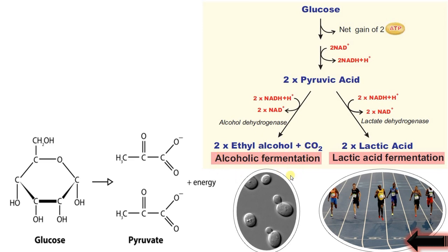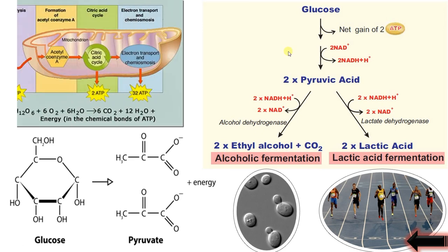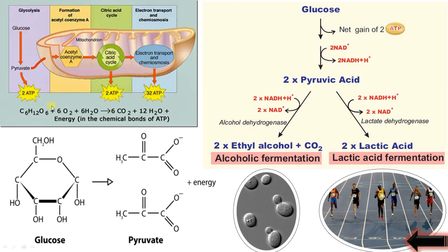In yeast cells, pyruvic acid is further converted to ethanol and carbon dioxide — this is called alcoholic fermentation. Whereas in higher animals, in muscles, this pyruvic acid under anaerobic conditions is converted to lactic acid — that is called lactic acid fermentation.